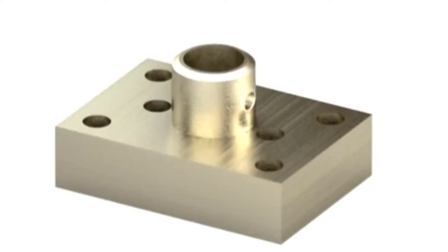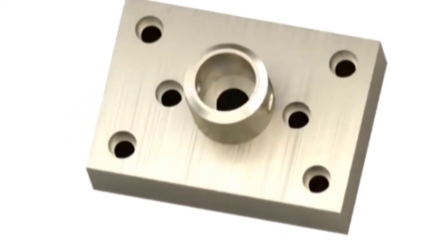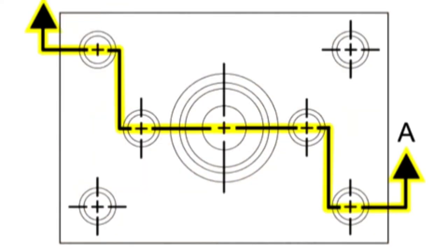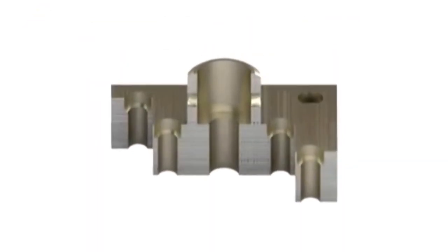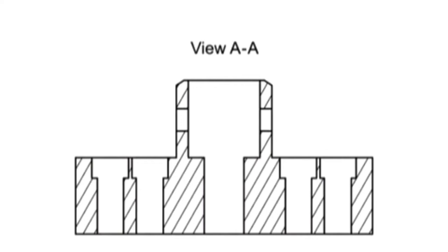An offset section results when the cutting plane line is bent to show internal features that are not in a straight line. The bends in the cutting plane are not shown in the section view.